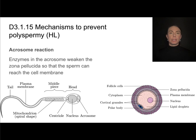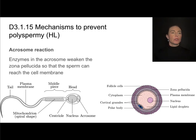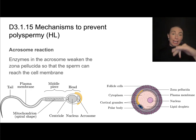The first thing that's going to happen in order for the first sperm to fertilize the egg is something called the acrosome reaction. This is initiated by the sperm and involves enzymes found in a structure called the acrosome. These enzymes will weaken the zona pellucida, making it easier for the sperm to reach the cell membrane of the egg.